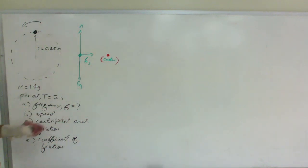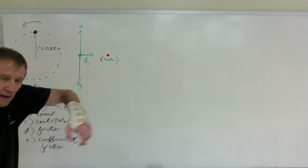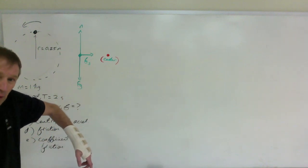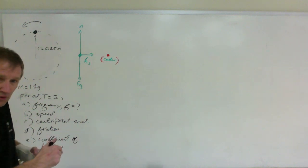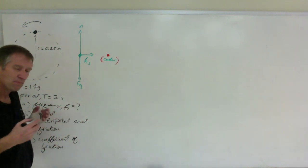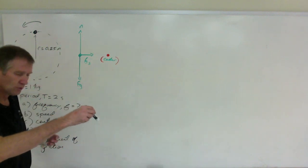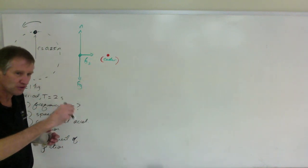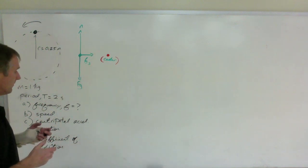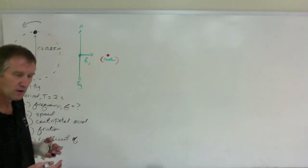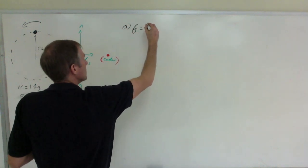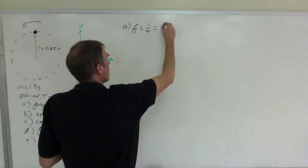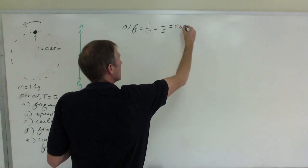To find the frequency — that's the number of revolutions completed per second — frequency is just the reciprocal of the period. The period is the time it takes to go around once; frequency is the number of revolutions per second. They are reciprocal concepts. So frequency equals 1 over the period, which is 1 over 2, and that equals 0.5 hertz.